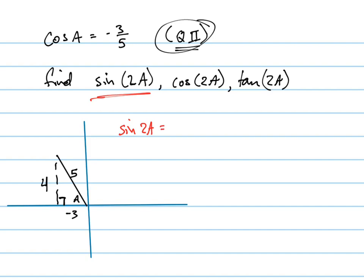Sine 2a equals 2 sine a cosine a, and we already know what cosine a is, and sine a is 4 fifths. So it's 2 times 4 fifths times negative 3 fifths.